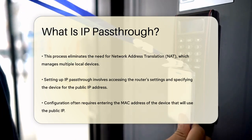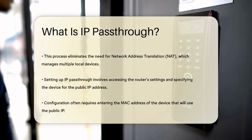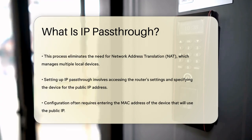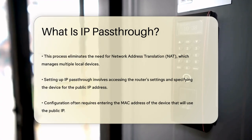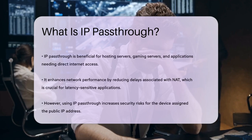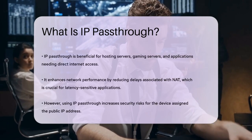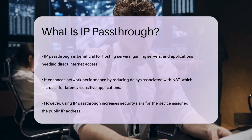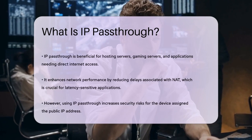To set this up, you need to go into your router's settings, specify the device that will use the public IP address, and configure the router to pass through the IP address. This is often done by entering the MAC address of the device you want to use the public IP address.